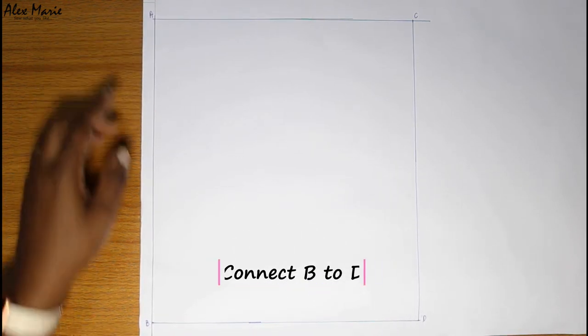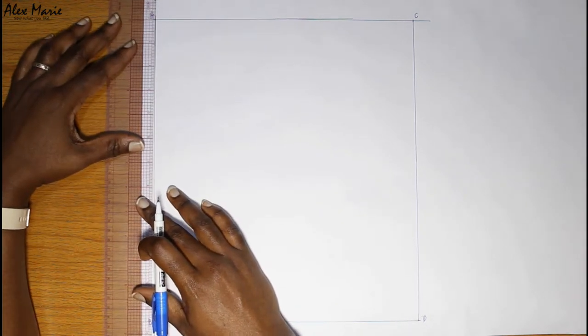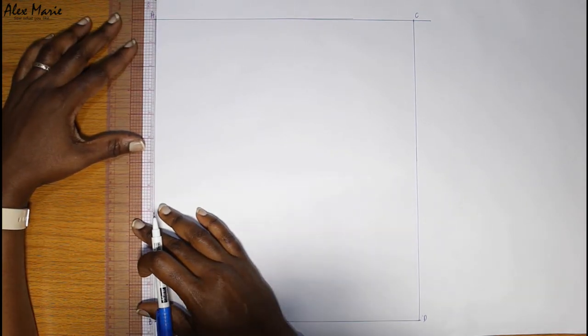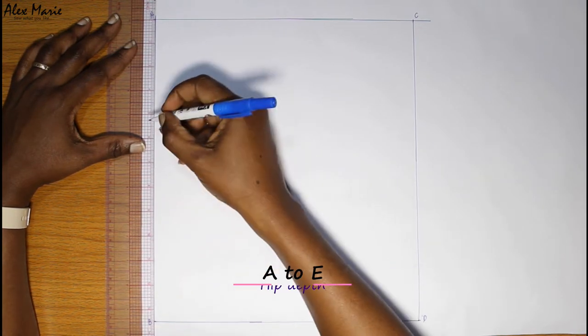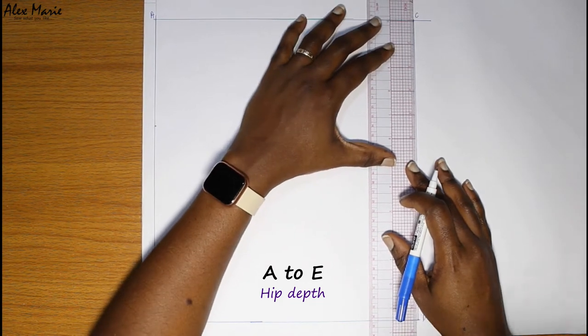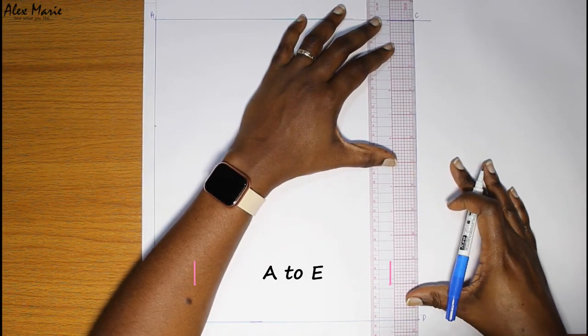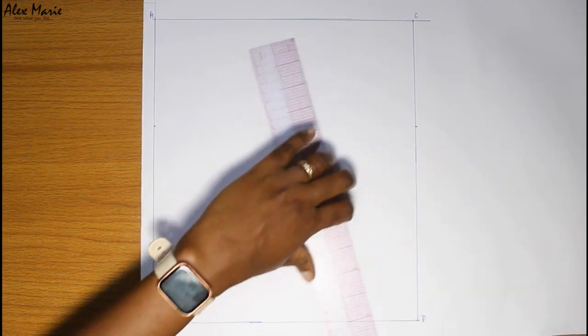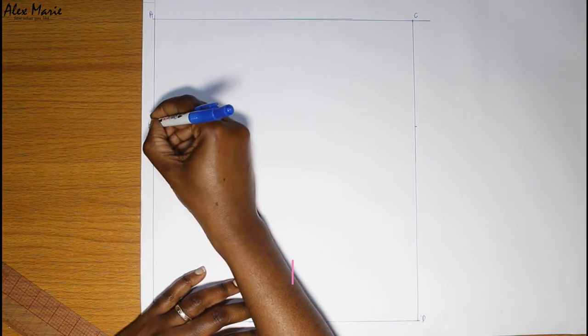Next we are going to put in our hip depth. This is point A to E. I'm going to do the same thing on the other side to put in point F, so E to F squares across.